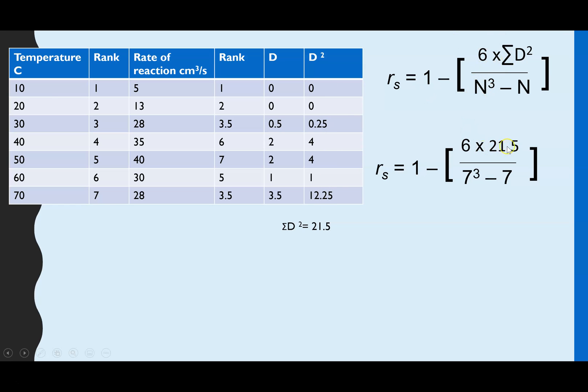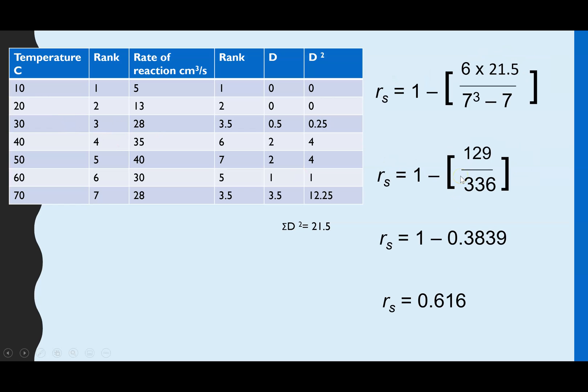So 6 times 21.5 and n was our number of pairs and we had 7. So then if we actually do that stage this is what we'll be dividing by and our final RS value is 0.616.